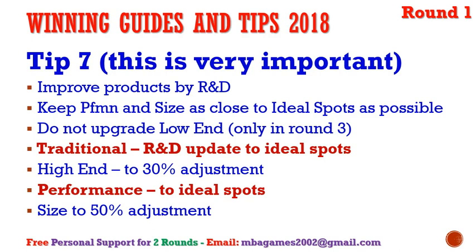Good performance and size can sell well especially from rounds four and five to the end of the game. Update traditional R&D to the ideal spot; for high-end, update as close to the ideal spot as possible — if you cannot because it takes longer and costs more, you can update about 30% toward it. For size, update as close to the ideal spot as possible. Rounds one to three take longer to update, but from round four or five onward it becomes quite easy.